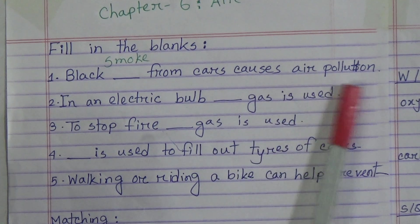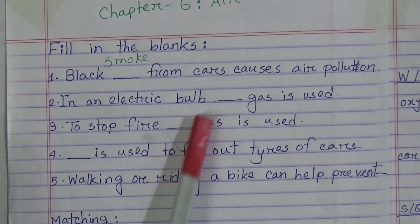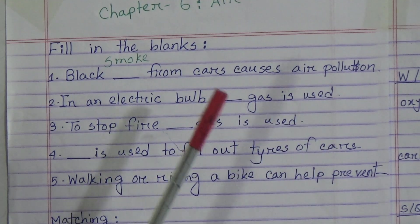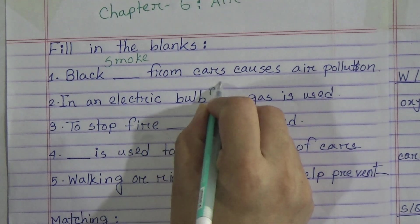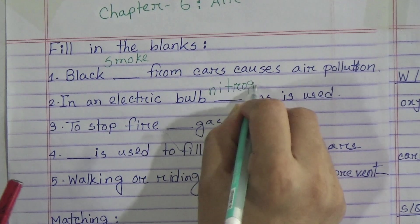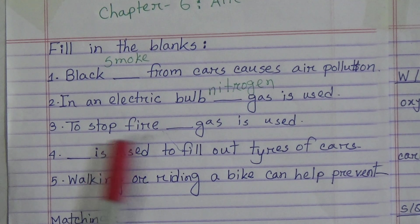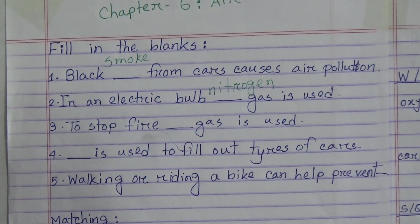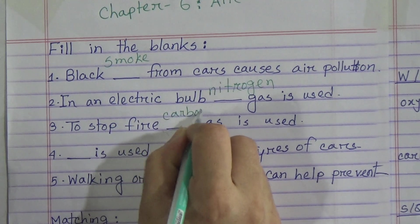Number two: in an electric bulb, dash gas is used. The answer is nitrogen gas. In an electric bulb, nitrogen gas is used. Write 'nitrogen.' Number three: to stop fire, dash gas is used. The answer is carbon dioxide. To stop fire, carbon dioxide gas is used. Write 'carbon dioxide.'